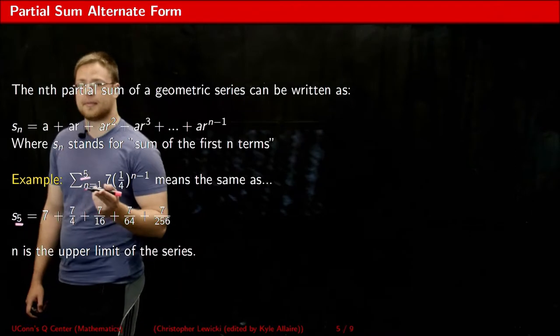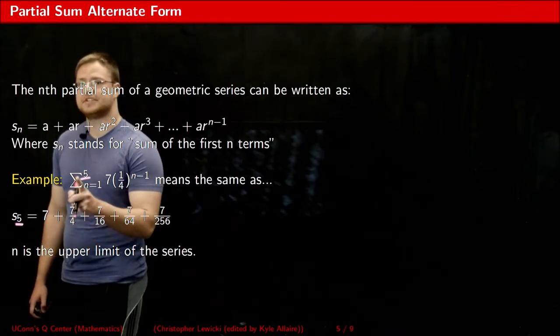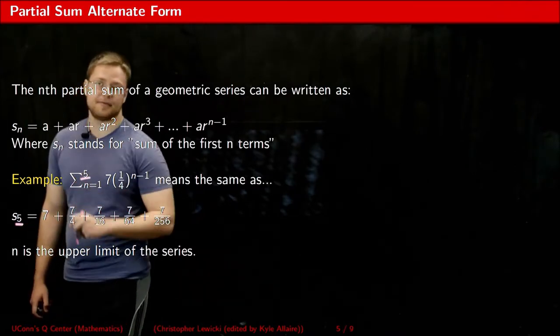The N value is always going to be whatever the upper limit of your series is. So in this example, the N value, five, matches with the upper limit of the series, five.